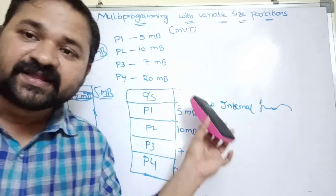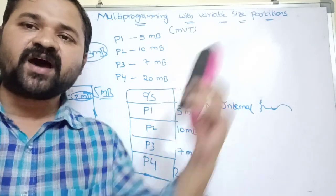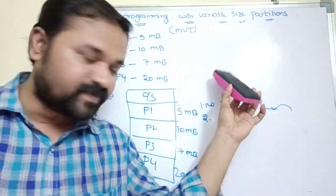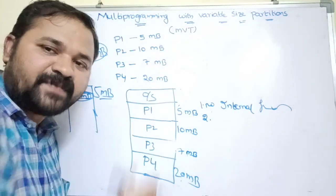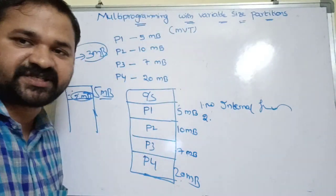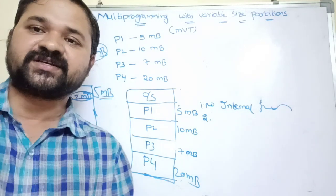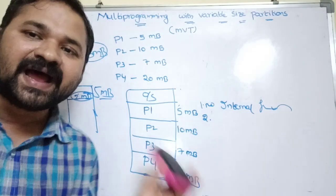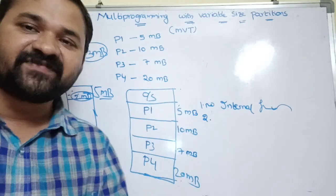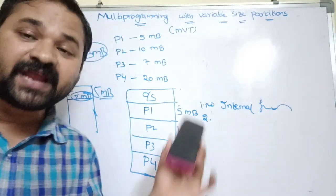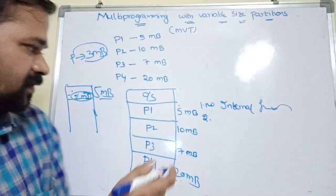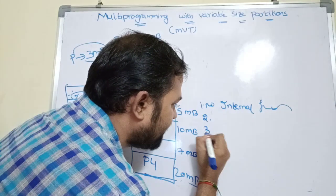The second advantage is there is no limitation on the number of partitions. If there are 10 processes, main memory creates 10 partitions. If there are 100 processes, main memory creates 100 partitions for storing those processes. So there is no limitation on the number of partitions.